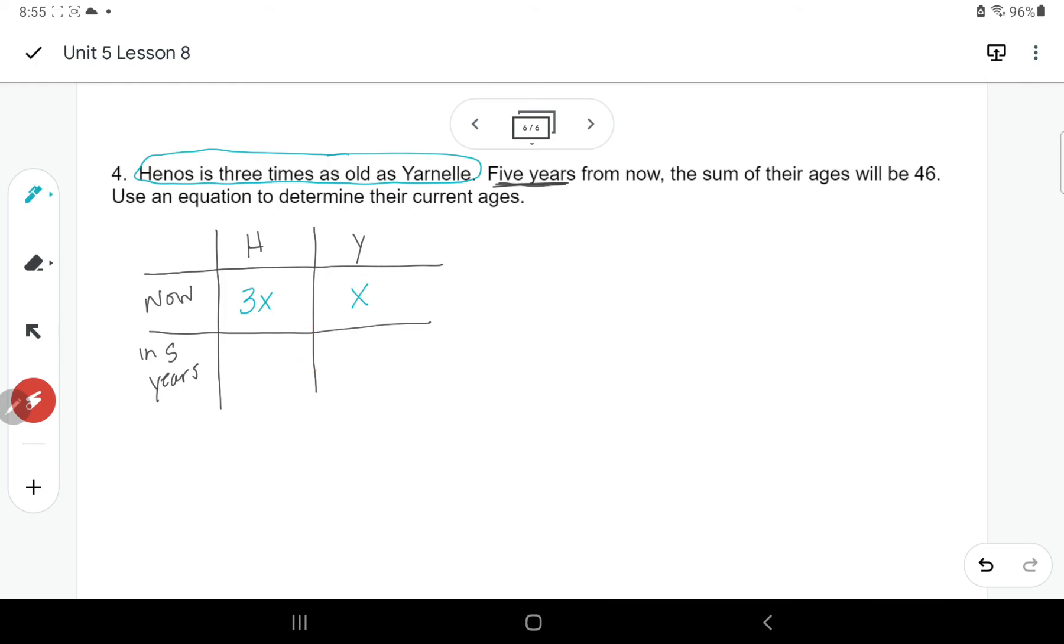Now we want to figure out what would their age be in five years. Well, how old are you now? If you are 14, in five years from now, you're going to be 19. So how do we get to that? We just add 5 on. So in five years, Yarnow will be X plus 5. And in five years from now, Hinos will be 3X plus 5.